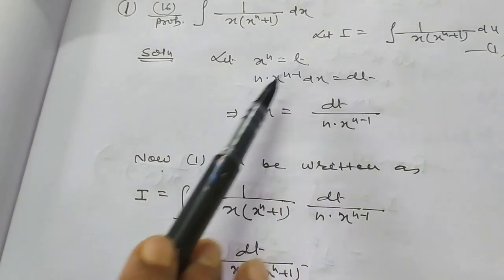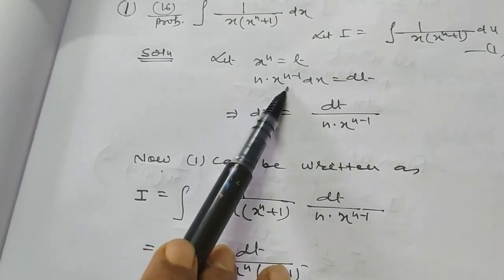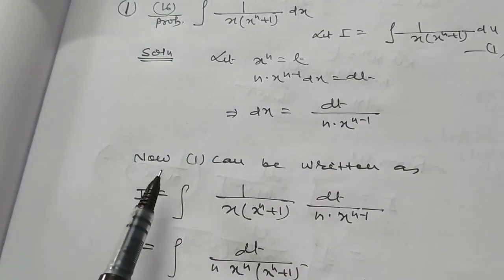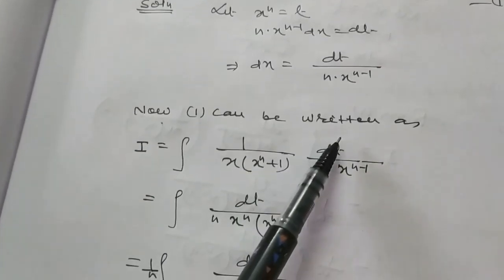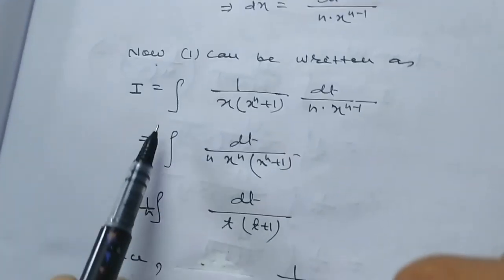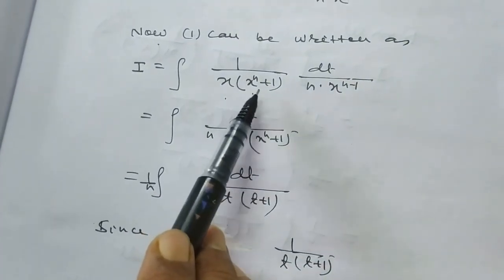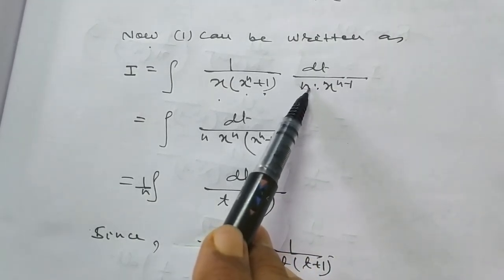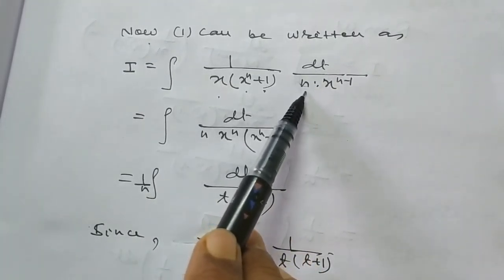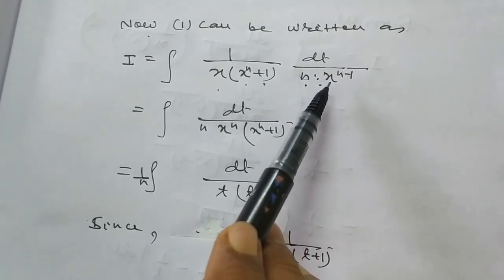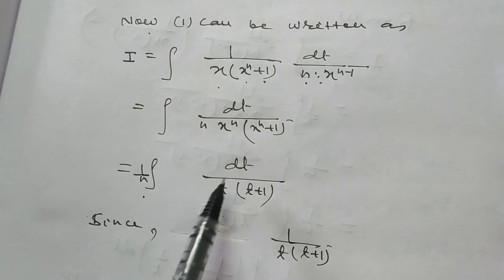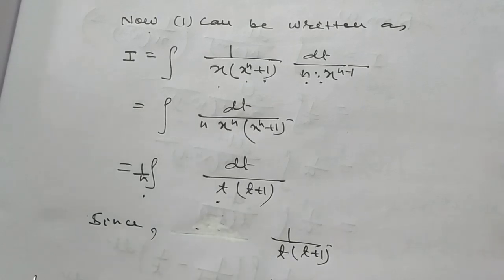Let x^n = t, so n * x^(n-1) dx = dt. Therefore dx = dt / (n * x^(n-1)). Now equation 1 can be written as: I = integral of 1/(x*(x^n+1)) with dx replaced: dt divided by n*x^(n-1). Now this problem will be in the form: (1/n) * integral of dt / (t*(t+1)).